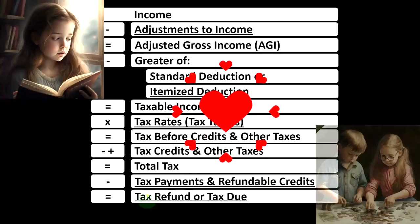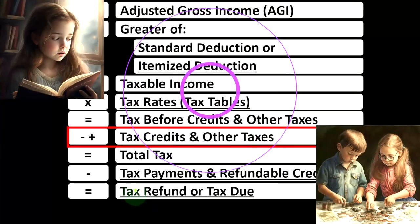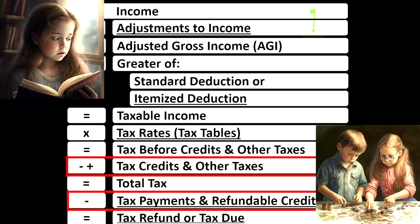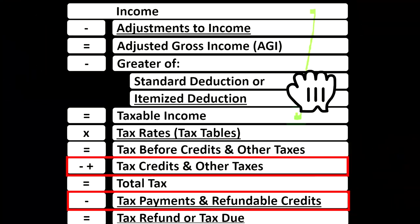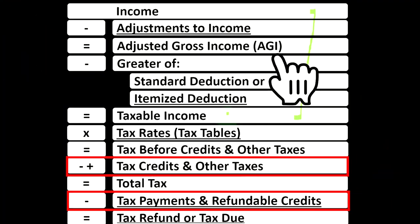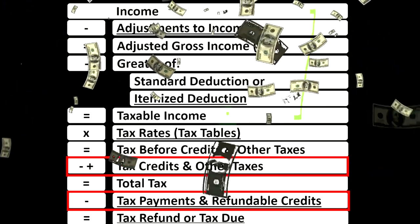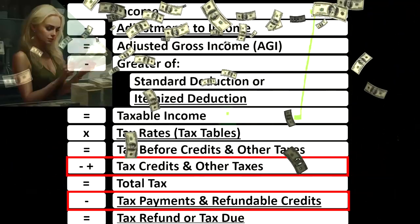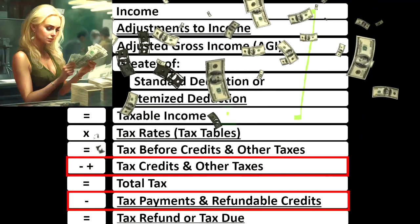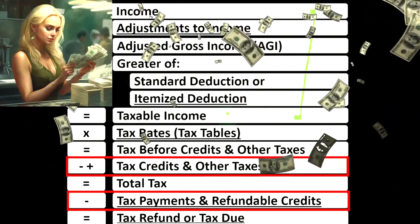Looking at the income tax formula, we're down here on the credit area at the bottom of the formula. Remember, the first half of the income tax formula is in essence an income statement, although a strange one ending at taxable income — the equivalent of an income statement ending at net income: income minus expenses, income minus deductions.